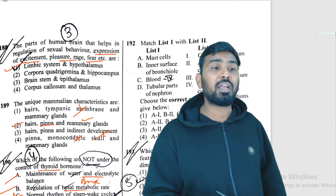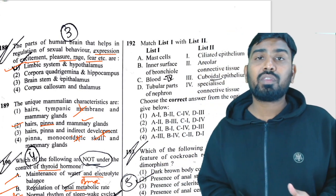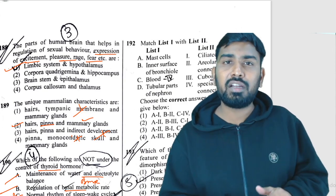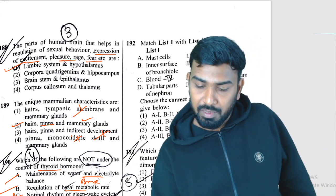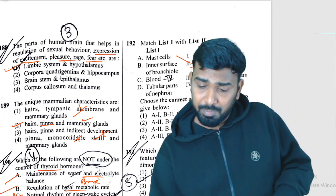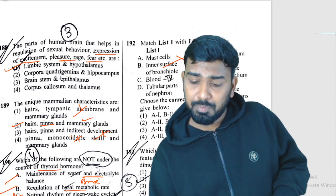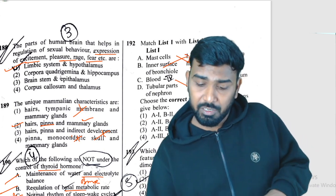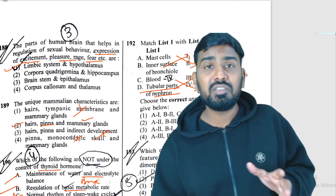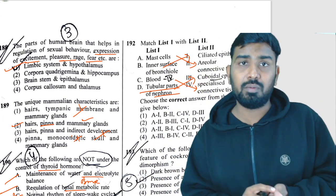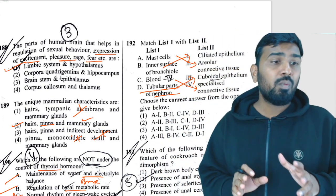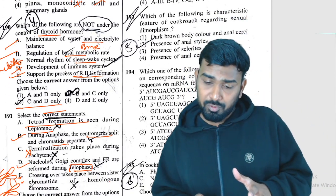Question 192: mast cells are found in areolar tissue (seen in the NCERT areolar tissue figure). The inner lining of bronchioles has ciliated epithelium. Blood is a special connective tissue — liquid connective tissue. Tubular parts of the nephron (e.g., PCT) have cuboidal epithelium. Q192 solved.